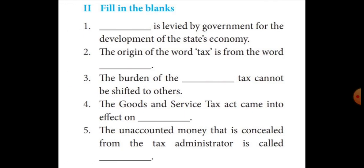Fill in the blanks. 1: Tax is levied by government for the development of the state's economy — answer: Tax. 2: The origin of the word tax is from the word — answer: Taxation. 3: The burden of this tax cannot be shifted to others — answer: Direct tax. 4: The Goods and Service Tax Act came into effect on — answer: 1st July 2017. 5: The uncounted money that is concealed from the tax administrator is called — answer: Black money.